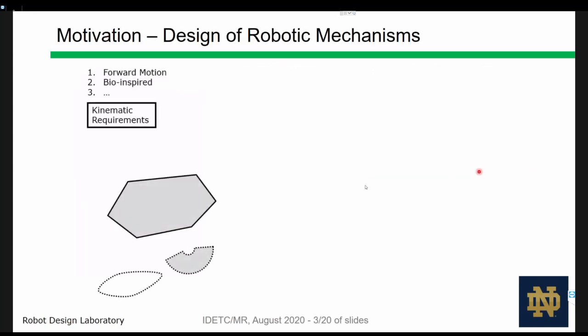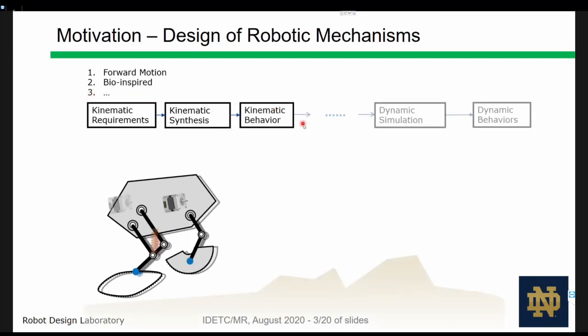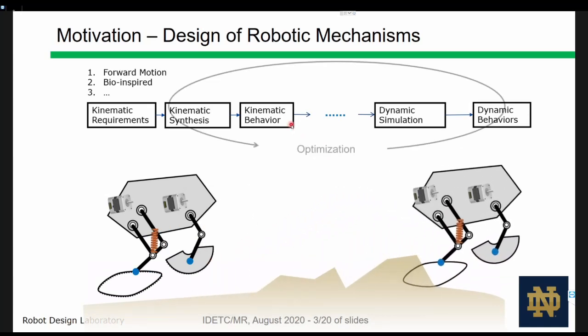A general workflow in the design of robot leg mechanism is to determine the motion requirements, synthesize mechanisms, analyze their behavior, simulate them in a dynamic environment, and then iterate.